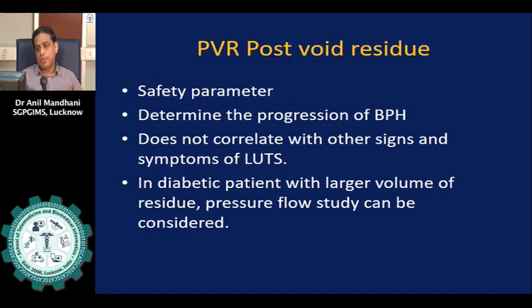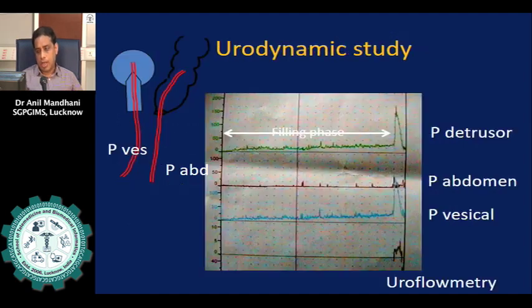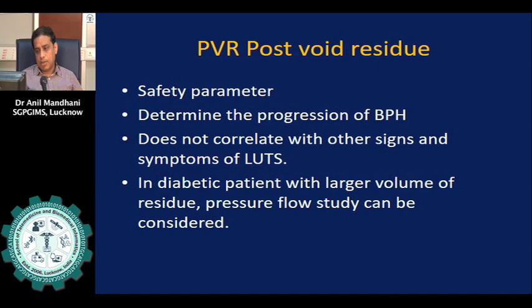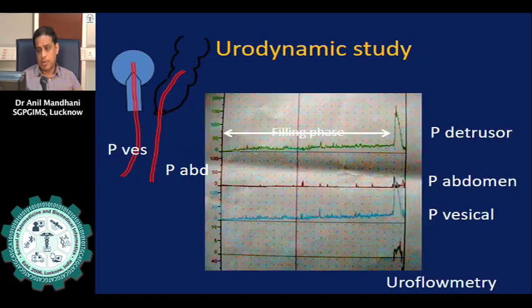Every symptom is given a score from 0 to 5, and the total score comes to 35.